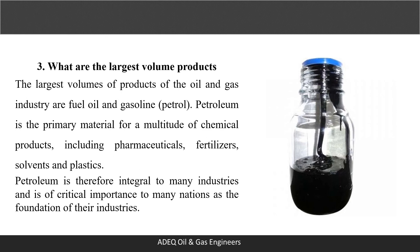And finally, let's talk about the largest volume products of the oil and gas industry. They are fuel and gasoline, also known as petrol. Petroleum is the primary material for a multitude of chemical products, including pharmaceuticals, fertilizers, solvents, and plastics. Petroleum is therefore integral to many industries and is of critical importance to many nations as the foundation of their industries.